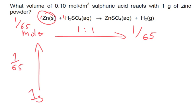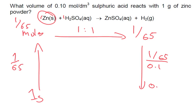The last part — we want to find out the volume. We do 1/65 divided by the concentration, which is 0.1, and we get 0.153 decimetres cubed. Multiplying that by 1000 gives us 153.8 centimetres cubed. That is our final answer.